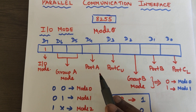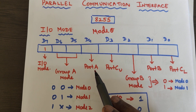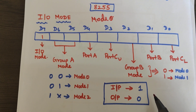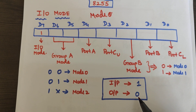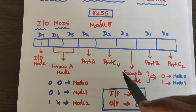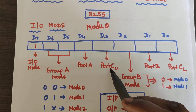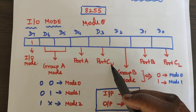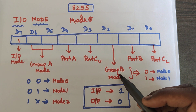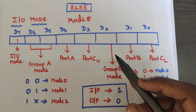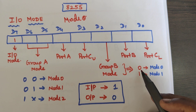D4 tells whether port A will act as input or output — value 1 means input, value 0 means output. D3 tells whether port C upper will act as input or output. D2 tells the mode selection for group B; since it is a single bit, 0 means mode 0 and 1 means mode 1.